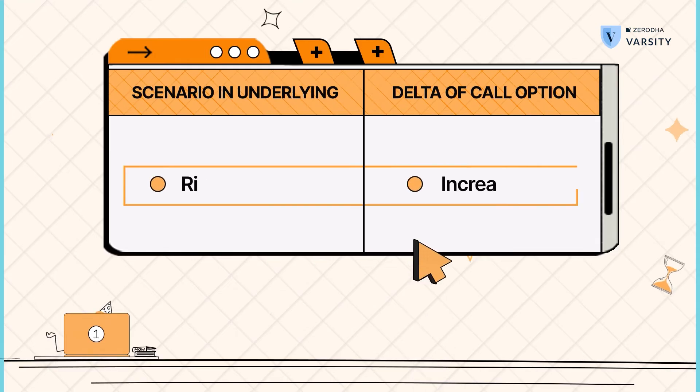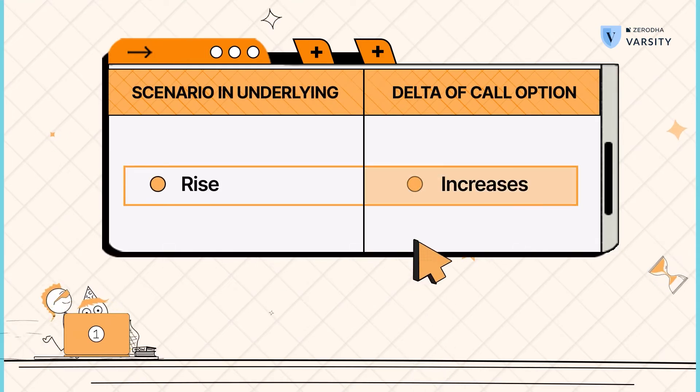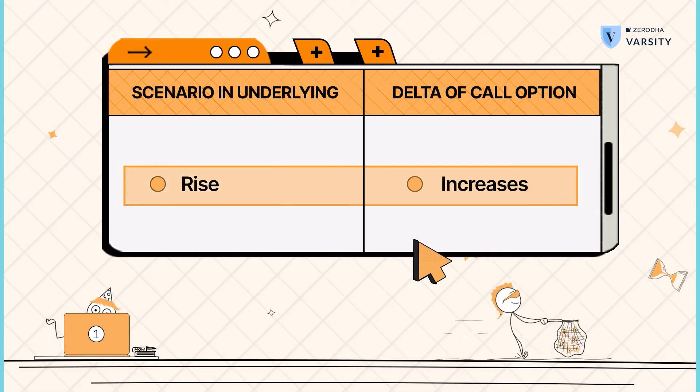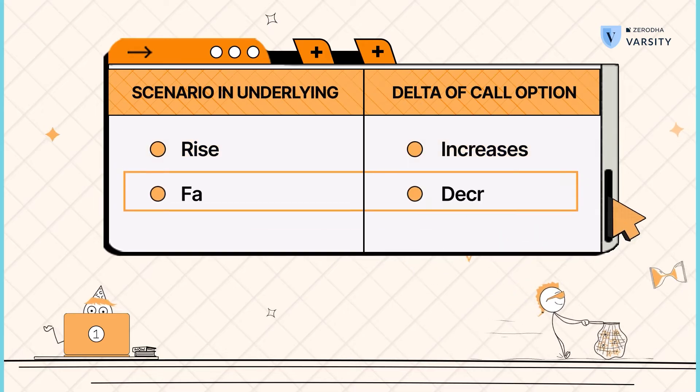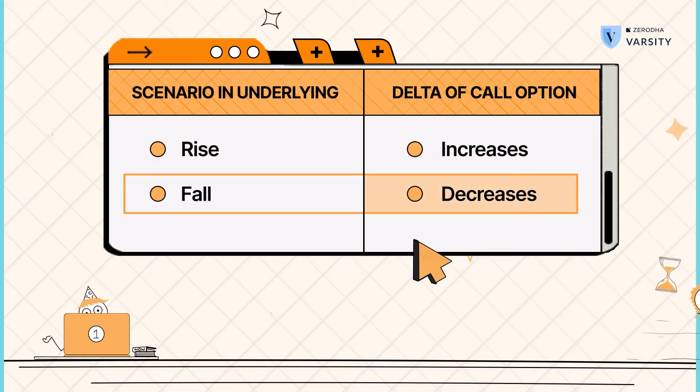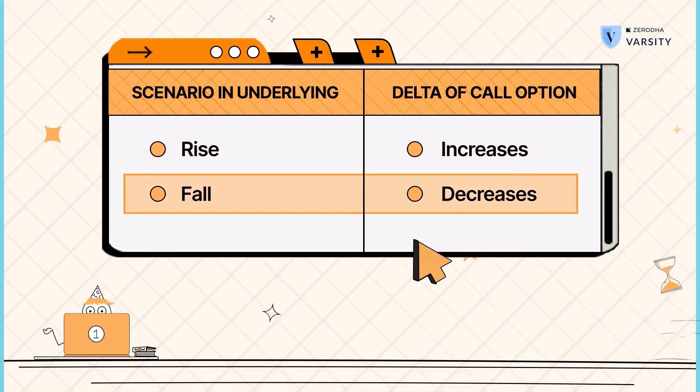This should be intuitive. Delta increases by the amount of gamma when the underlying rises, and falls by the amount of gamma when the underlying falls.